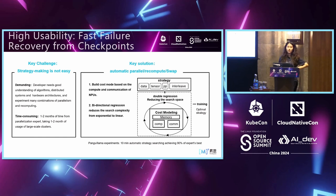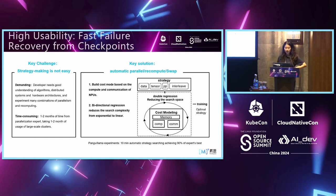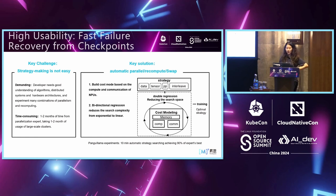For fully automatic parallelism, we build a cost model based on compute and communication of NPUs to automatically determine slicing strategies, parallelization modes, device allocation, memory management, and computation-communication scheduling. We achieve this using bi-directional regression, which reduces search complexity from exponential to linear. An experienced expert might take two weeks or even a month to design a suitable parallelization strategy manually. With this technique, it takes approximately 10 minutes to automatically search for a strategy achieving about 90% of the expert's best performance.